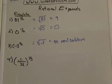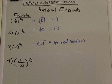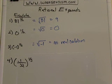Let's look at number 4, the last one. Negative 1 over 32 raised to the 1 fifth power. What is our denominator of this rational exponent? Our denominator is 5. So the denominator becomes the index of the radical.